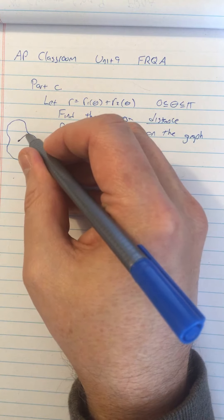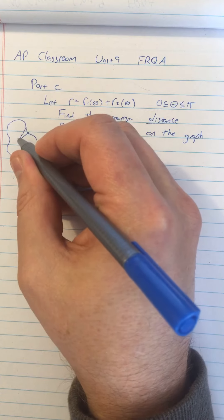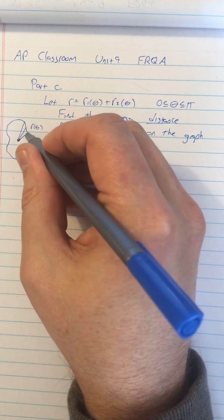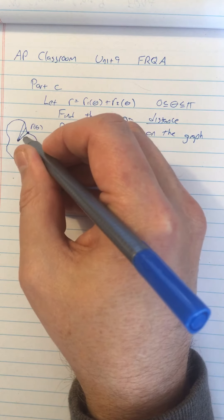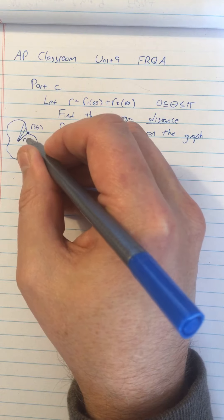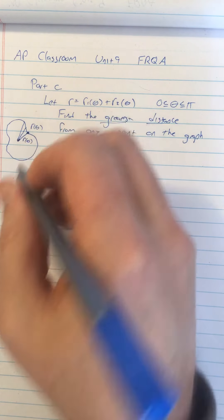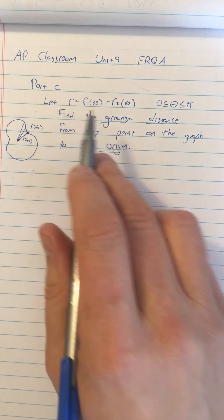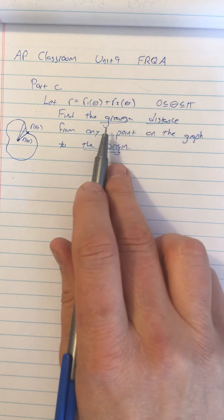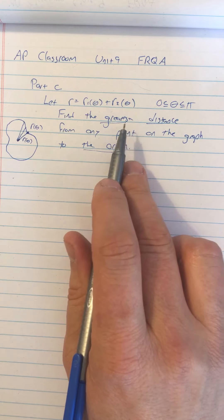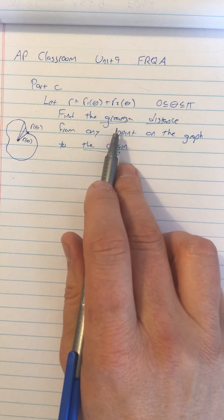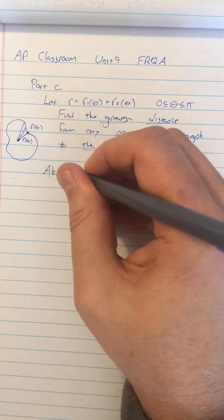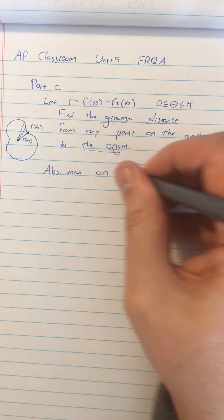So what does it mean, the distance to the origin? Well, that's just the value of R. So this is a function R of theta. The distance from the origin to that point is just the length of R. So it's just R of theta. So what we're really doing is finding a maximum value of R. And since we're finding that on a closed interval and it says the greatest distance, we're really looking for an absolute max on a closed interval.